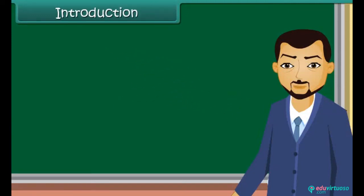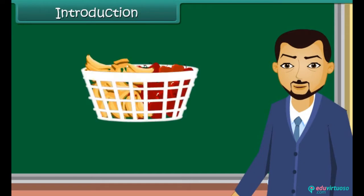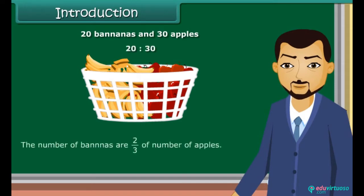Introduction. Ratio means comparing two quantities. A basket has two types of fruits: 20 bananas and 30 apples. The ratio of the number of bananas to the number of apples is equal to 20 is to 30. The number of bananas are 2 upon 3 of the number of apples. In terms of ratio, this is 2 is to 3, read as 2 is to 3.